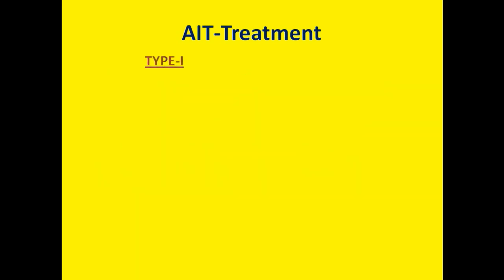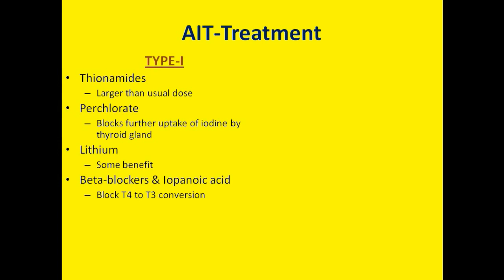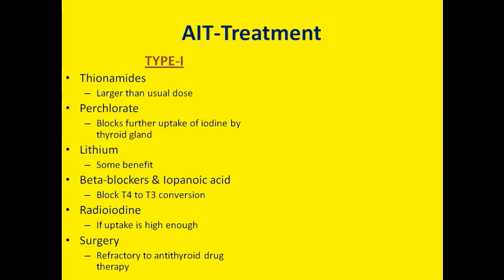Type 1 AIT should be treated with thionamides, usually required in larger than usual doses. Perchlorate blocks further uptake of iodine by the thyroid gland and is somewhat beneficial. Lithium also has some benefit. Beta-blockers and iopanoic acid block T4-to-T3 conversion and are useful. Radioiodine can be used if uptake is high enough, and surgery is reserved for those refractory to antithyroid drug therapy.